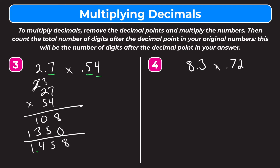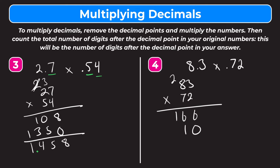Let's try number 4. We have 8 and 3 tenths times 72 hundredths. So let's rewrite that as 83 times 72. 2 times 3 is 6. 2 times 8 is 16. Moving one place over when we deal with the 7, so we put a 0 here. 7 times 3 is 21, carry the 2. 7 times 8 is 56, plus 2 is 58.